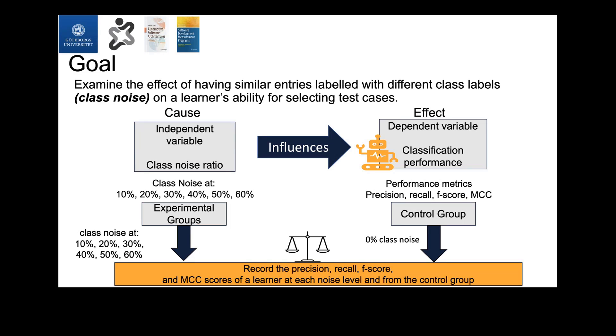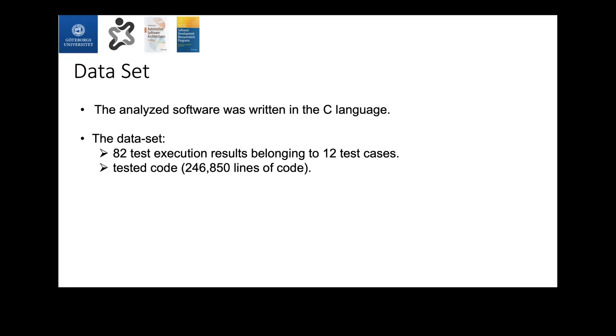We used six variations of noise. In this study, we used 10 percent, 20 percent, 30, 40, 50, and 60 percent. And then we compared the performance score of a predictor for test case selection under each level with the rest. The data we used belonged to a software telecommunication company. The program was written in the C language. We worked with 246,850 lines initially, and also 82 test execution results that belong to 12 test cases.